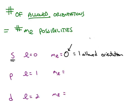Remember, an s orbital is spherical in shape. If you picture a perfect sphere, you can rotate that sphere any number of degrees you want. Those are all different orientations, but the number of allowed orientations is only one.